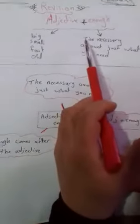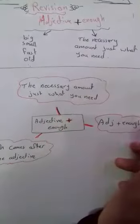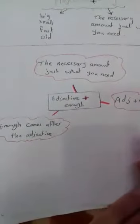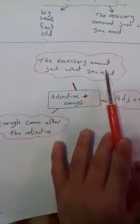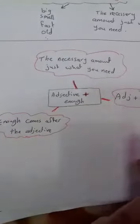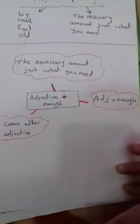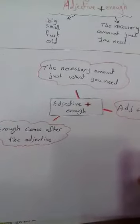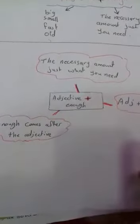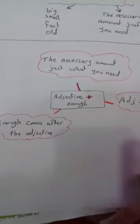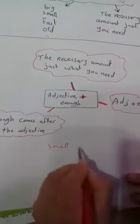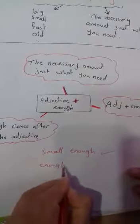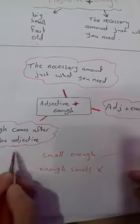It means the necessary amount, just what you need. Now we have here adjective plus enough. We write adjective plus enough like this, and enough comes after the adjective. So we say small enough, not enough small. We don't say enough small.